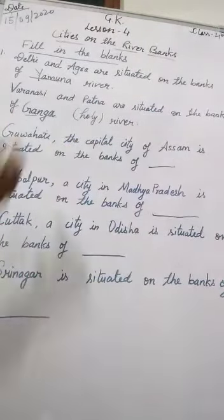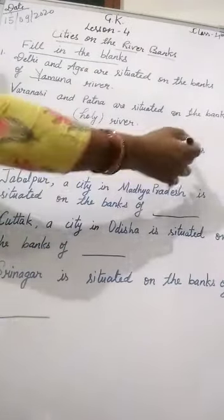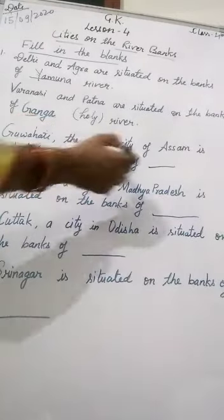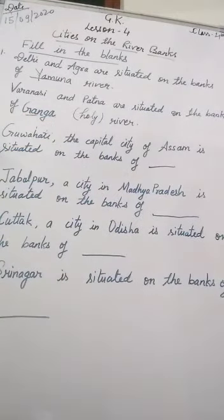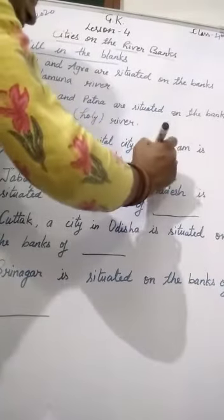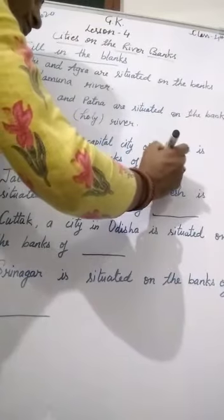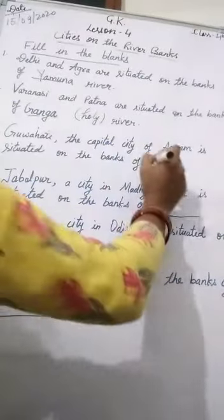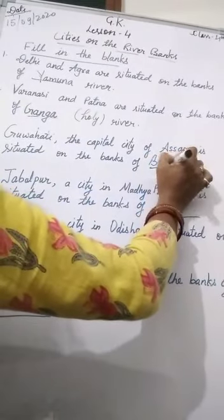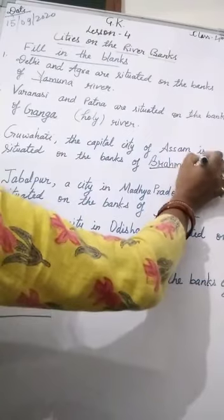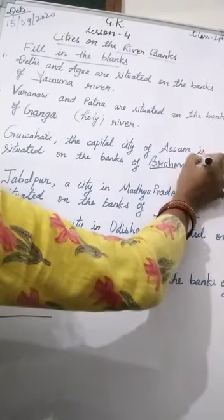Guwahati, which is Assam's capital, is situated on this river. So this is our Brahmaputra. You have to write here — Brahmaputra.